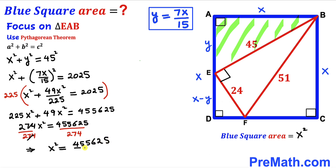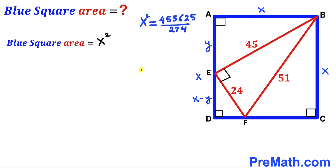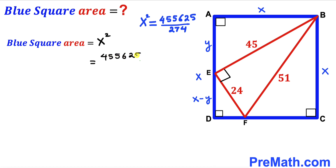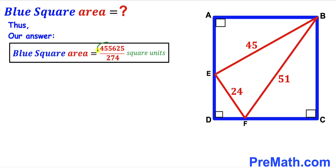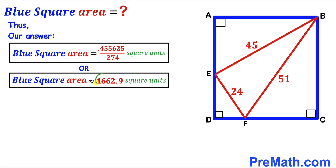Here's our final step. The area of blue square A, B, C, D equals x², and our x² value is 455625/274. So the blue square area is 455625/274 square units, which is approximately equal to 1662.9 square units. That's our final answer. Thanks for watching and please don't forget to subscribe to my channel for more exciting videos.